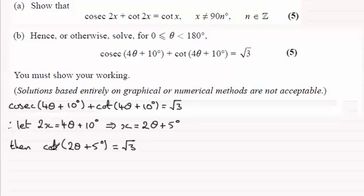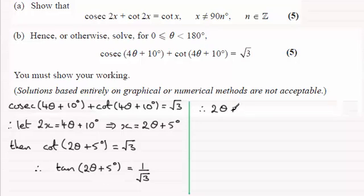And so therefore to solve something like this, I'm going to see this as 1 over tan of 2 theta plus 5 degrees equaling root 3. So rearranging that it must mean that therefore the tan of 2 theta plus 5 degrees must equal 1 over root 3. So therefore 2 theta plus 5 degrees is going to be equal to the inverse tan of 1 over root 3. And that is 30 degrees. So therefore we've got 2 theta plus 5 degrees is equal to 30 degrees.